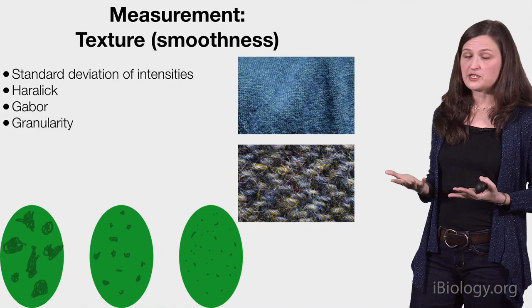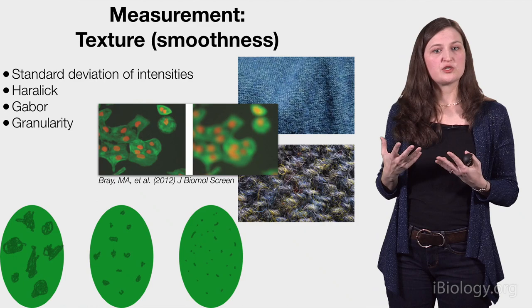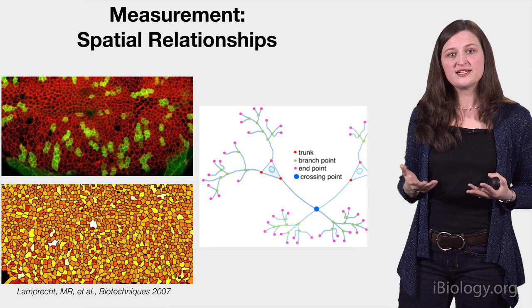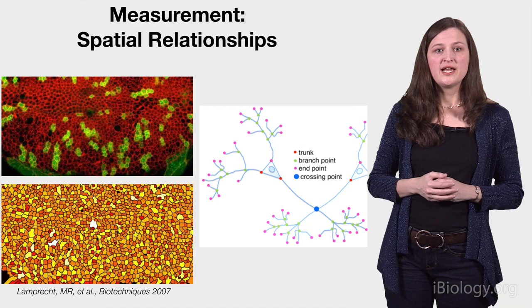Finally, spatial relationships can reveal some really interesting biology. You can look at things like how many neighbors each cell has within a tissue, the properties of cells nearby other tissue structures such as vasculature, and the distribution of synapses along neurons, for example.